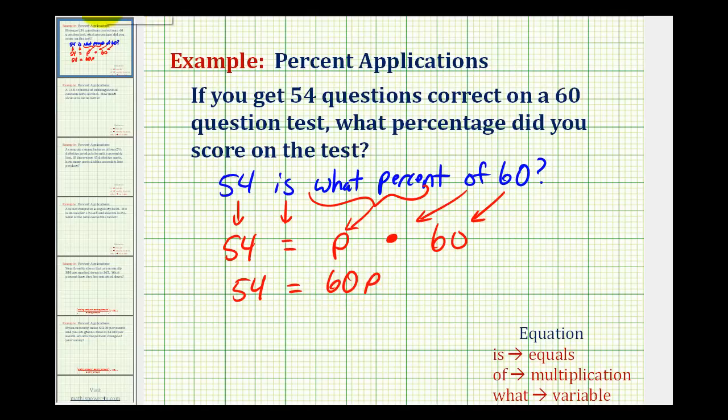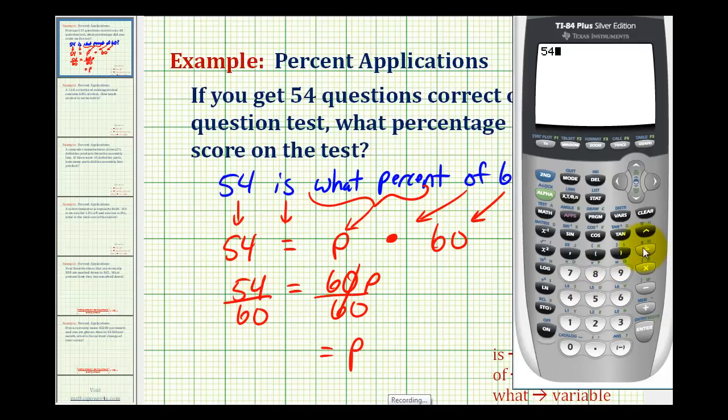So to solve for p, we'll divide both sides by 60. So p is equal to 54 divided by 60, which equals 0.9.